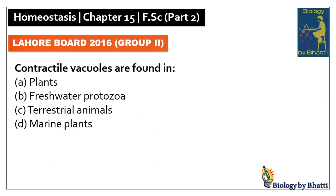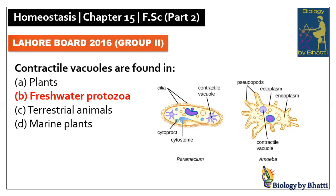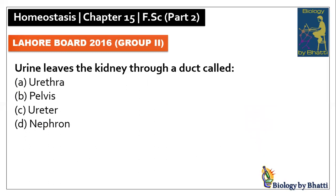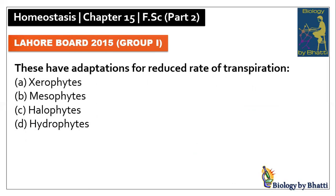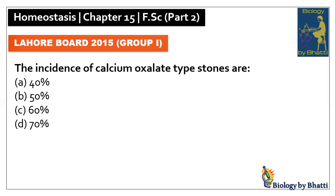Lahore Board 2016 Group 2: fresh water protozoans pump out excess water by contractile vacuoles, so the answer was D option. In this paper, urine leaves the kidney through a duct called the ureter, so the answer was C option. Lahore Board 2015 Group 1: plants with adaptations for reduced rate of transpiration in aquatic habitats are called hydrophytes, D option. In this paper, the incidence of calcium oxalate type stones are 70%, so the answer was D option.